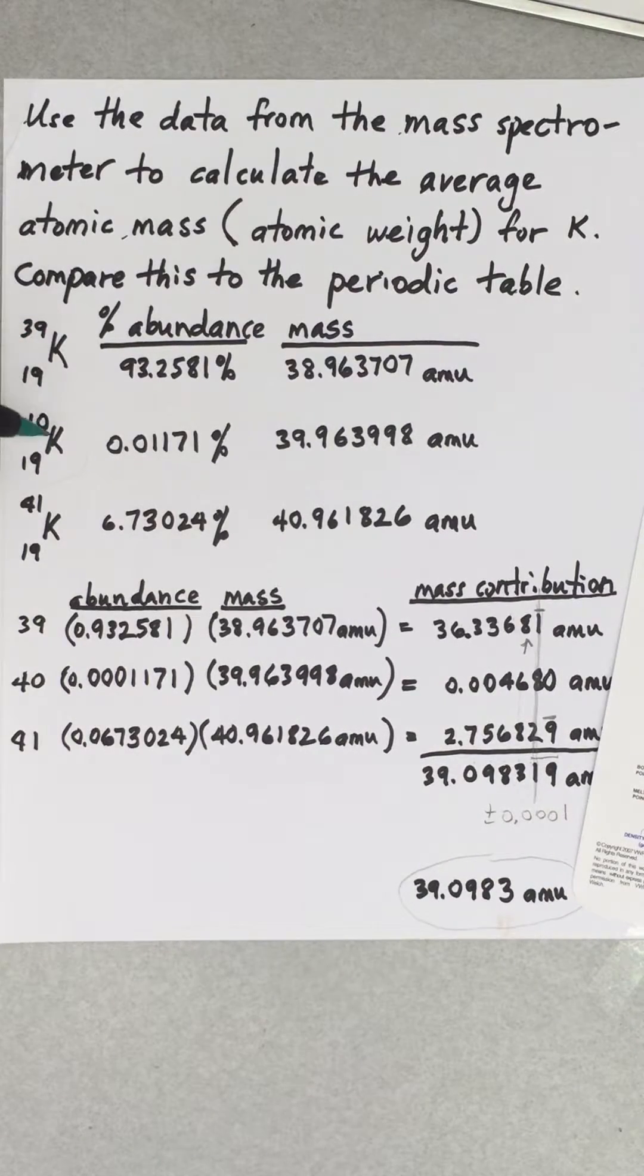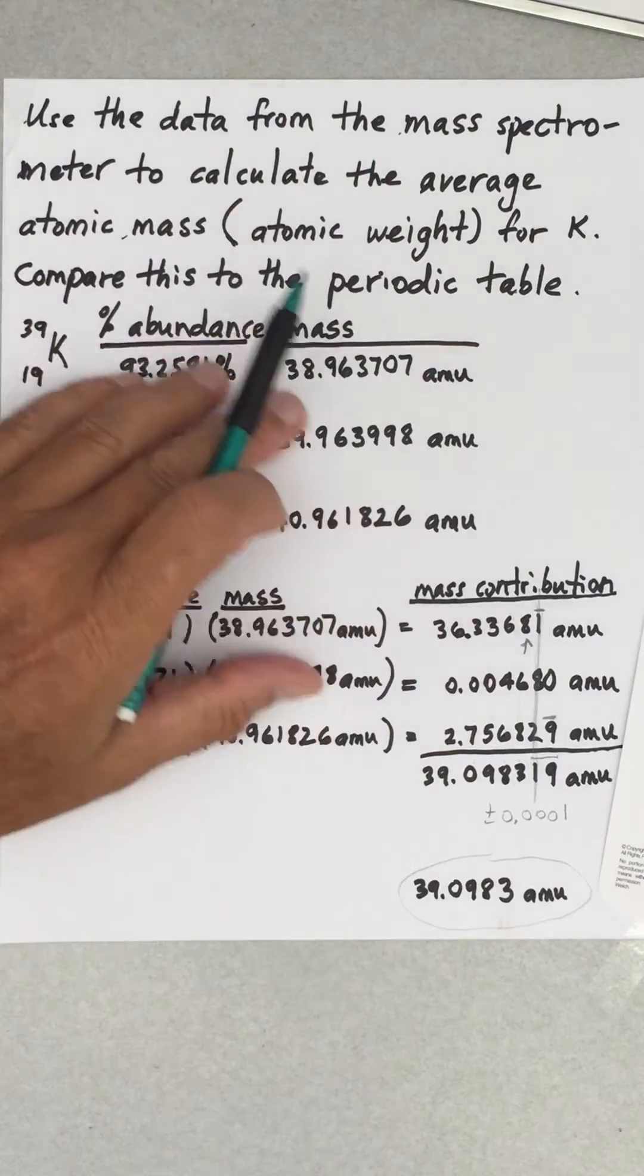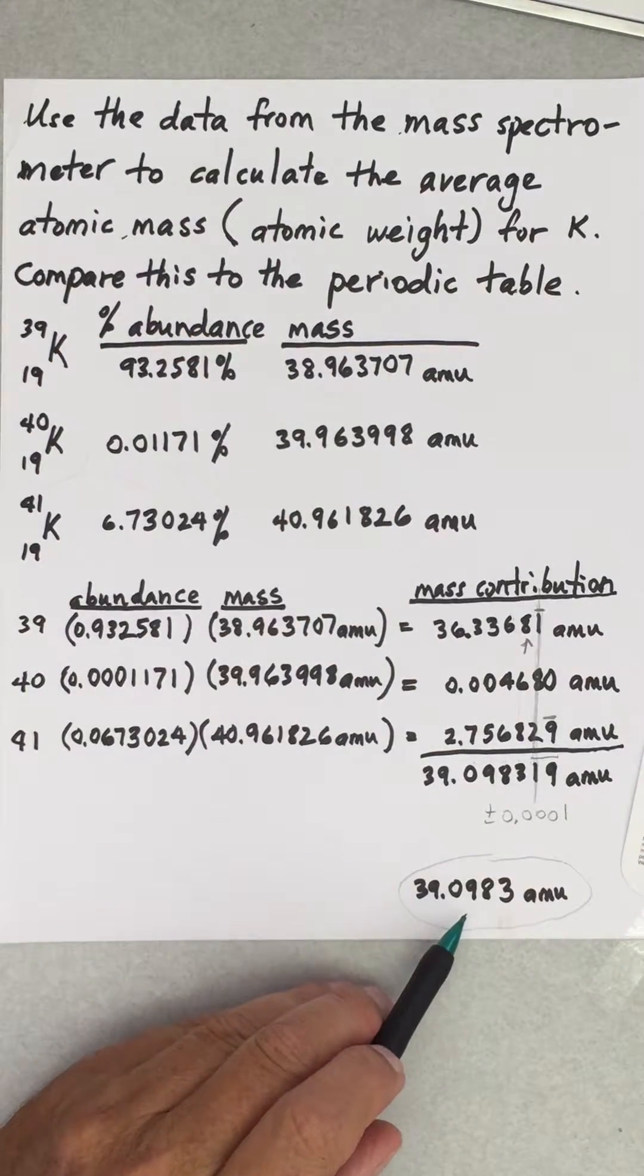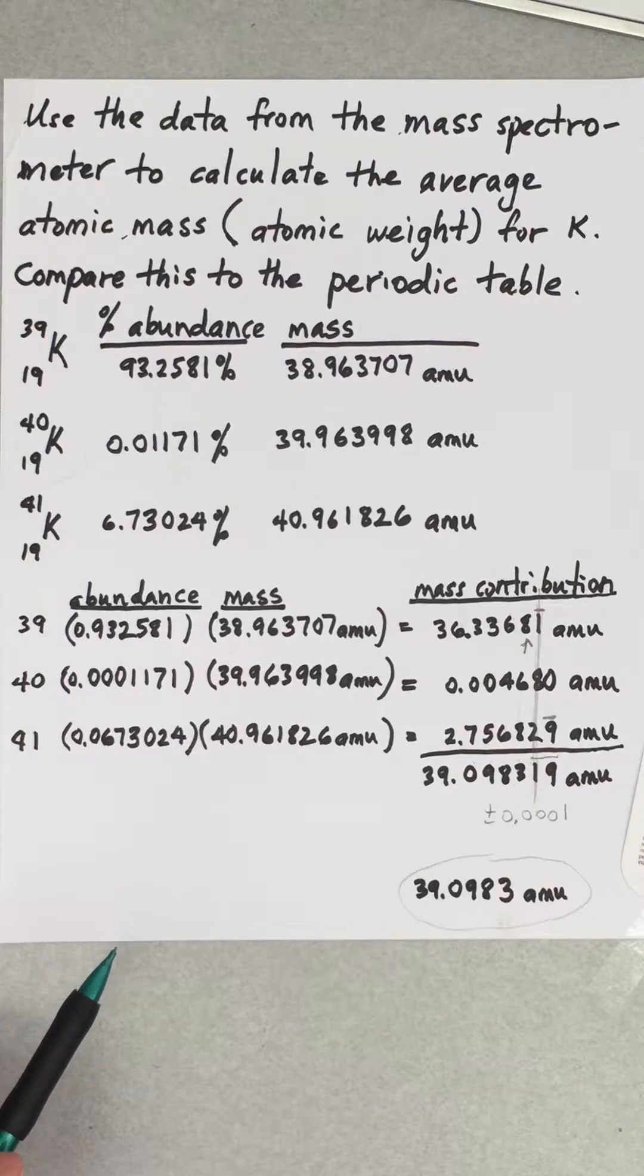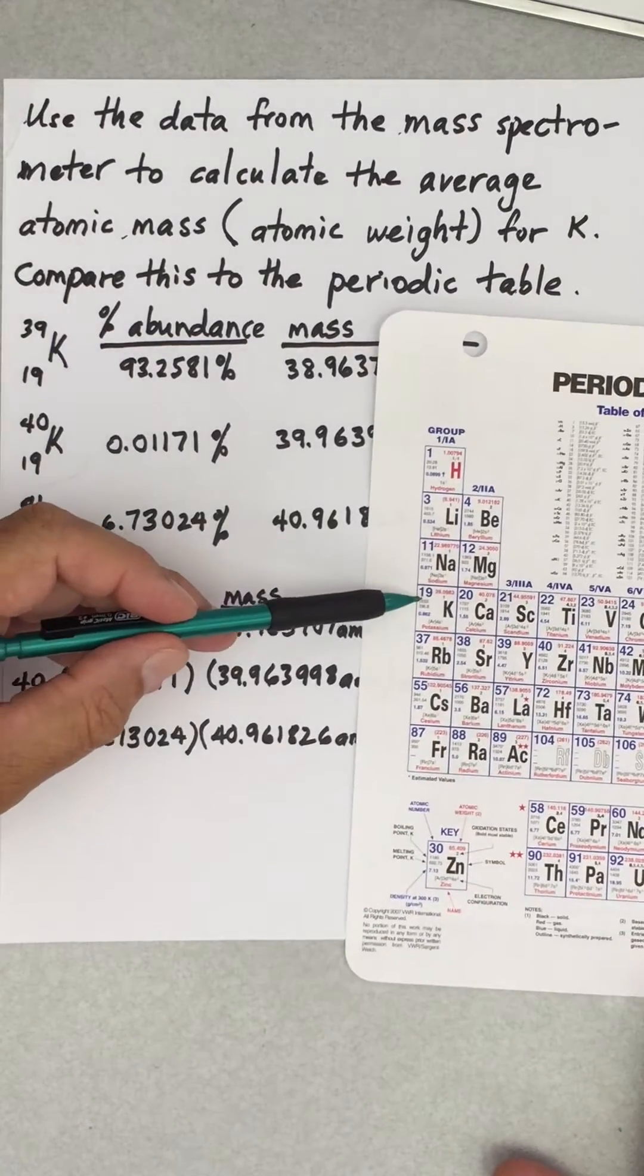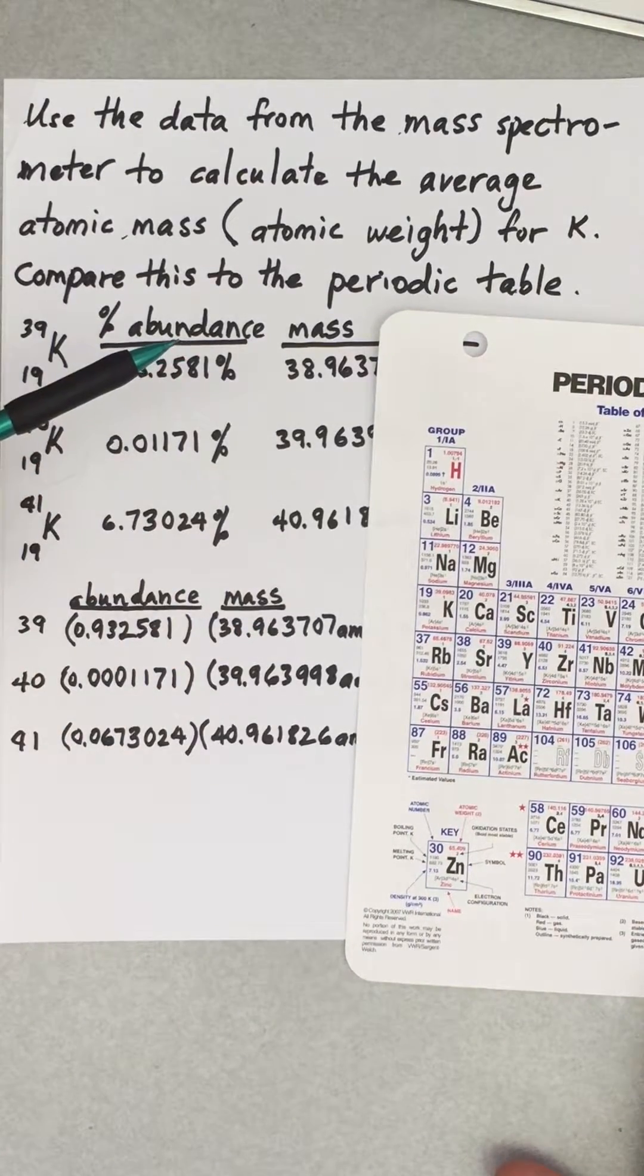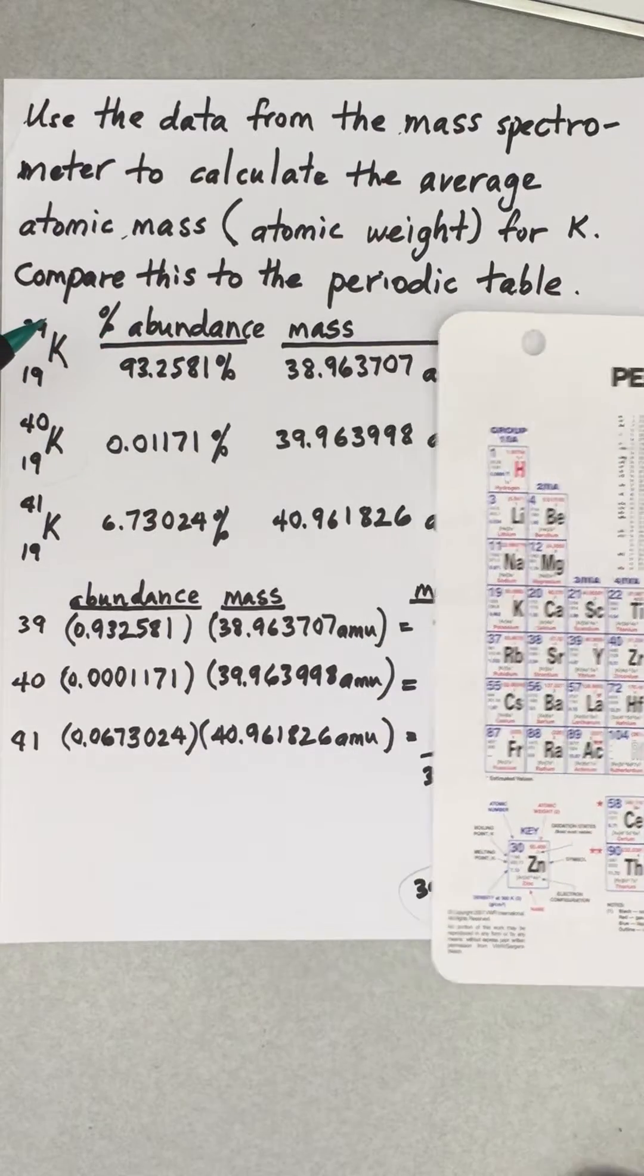So here the abundance happens to be this amount. If you go to another part of the world, this might not be 93.2581, it might be say 91 or 92 or something like that. So the data gives you this number. That's what we're trying to get you to learn how to calculate. And how it relates to this, it may or may not be the same number depending upon where the sample came from.